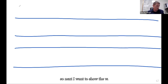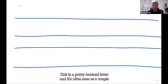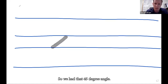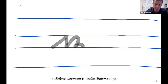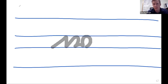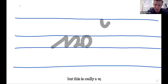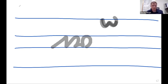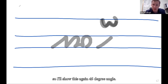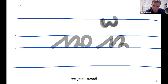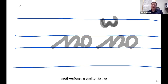Next I want to show the W. This is a pretty unusual letter. We have that 45-degree angle — this is a W — and then we make the V we just learned. It almost looks like we made a C and a V, but this is really a W. So: 45-degree angle down, come back up, start to make our V, and we have a really nice W.